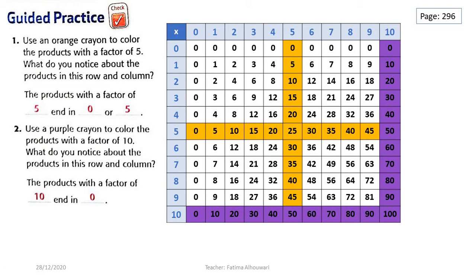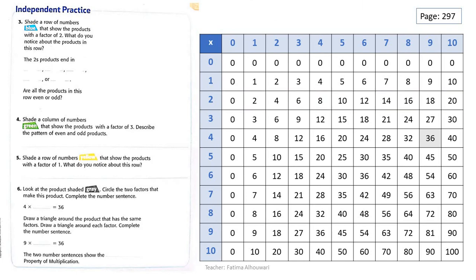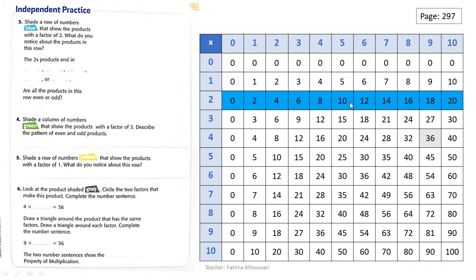Amazing! Please, grade 3, be sure to color these numbers and write these answers in your book. Now let's see question number 3 on page 297. Shade a row of numbers blue that show the products with a factor of 2. The question asks for a row. So let's find where the factor 2 is — here it is. These are the products with a factor of 2. This is the row, so we will color this row.